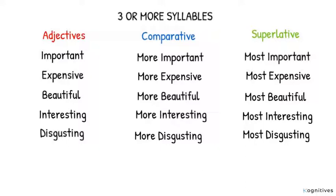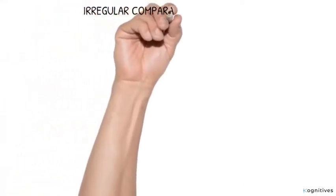We have irregular comparative and superlative forms of adjectives. Now let's talk about these. Irregular comparatives and superlatives. Adjectives, comparative, superlatives. Number one: Good, better, best.